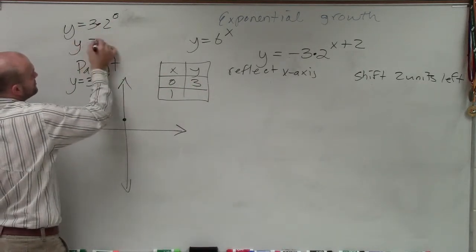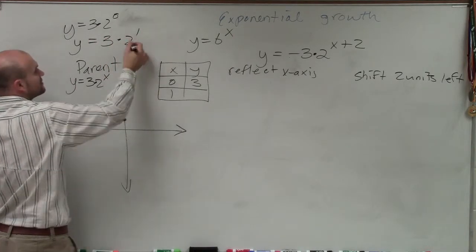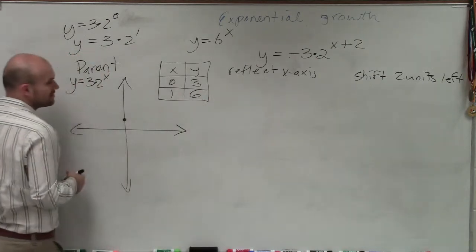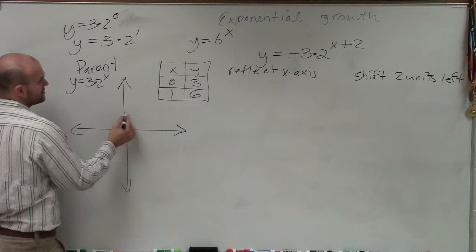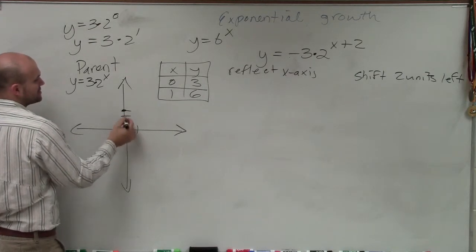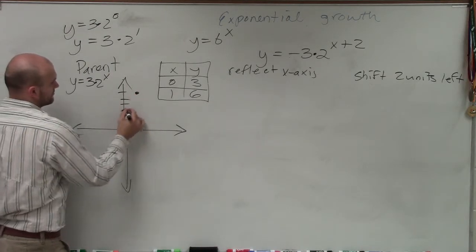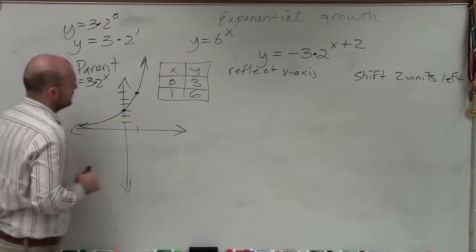Then I'll check for what happens when x equals 1. And y equals 3 times 2 to the 1st. 2 to the 1st is going to be 2. 2 times 3 is going to be 6. Therefore, my parent graph crosses at 0, 3, and over 1, up 6.